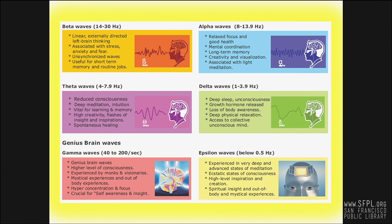Beta is associated with a frequency range of 14 to 30 hertz — cycles per second. These are the brainwaves generated when we are fully awake and alert. Our brains generate beta waves when we are thinking actively, problem solving, engaging in productive activity, or actively communicating with others. Beta waves in the higher frequency range are also associated with states of high alert, such as fear and agitation.